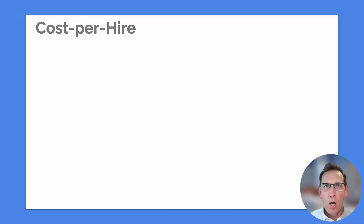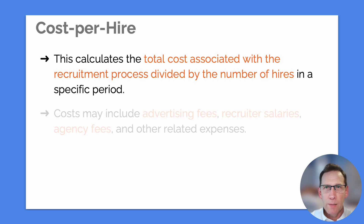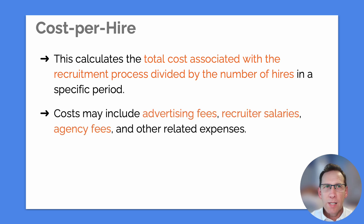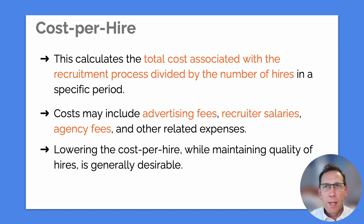Next is cost per hire. This calculates the total cost associated with the recruitment process divided by the number of hires in a specific period. Costs may include advertising fees, recruiter salaries, agency fees, and other related expenses. Lowering the cost per hire while maintaining quality of hires is generally desirable.